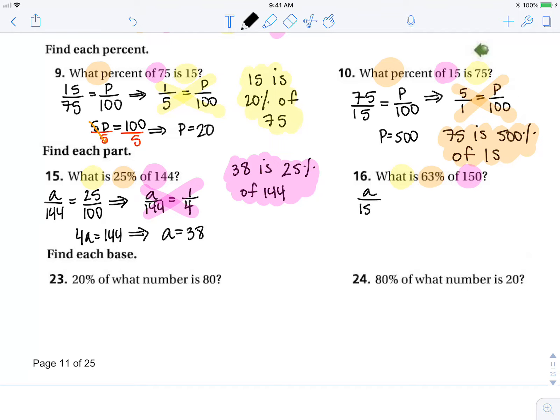Is, of, equals percent out of 100. Cross products are equal. 100a equals 63 times 150. So 100a equals 60 plus 3 times 100 plus 50. So 100a equals 6,000 plus 300 plus 300 plus 150. So 100a equals 6,750.